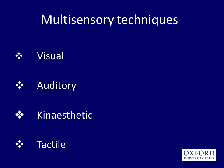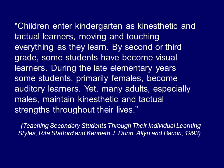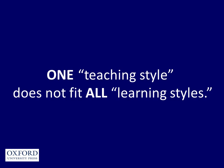We have differentiated four different types of learners: visual, auditory, kinesthetic, and tactile. Children enter kindergarten as kinesthetic and tactile learners — moving and touching everything as they learn. By second or third grade, some students become visual learners. During the late elementary years, some students — primarily females — become auditory learners. Many adults, especially males, maintain kinesthetic and tactile strength throughout their lives. Maybe that's why they are better at assembling furniture. We must remember that one teaching style does not fit all learning styles.